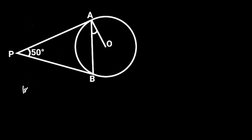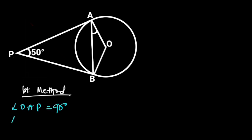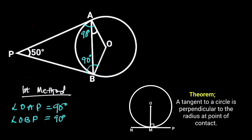First method. To solve this problem, first let's draw a straight line from O to B. Since PA and PB are tangents and OA and OB are radii of the circle, it follows that angle OAP is equal to 90 degrees and angle OBP is equal to 90 degrees. Reason: from the circle theorem of tangent and radius, which states that any tangent to a circle is perpendicular to the radius at the point of contact.